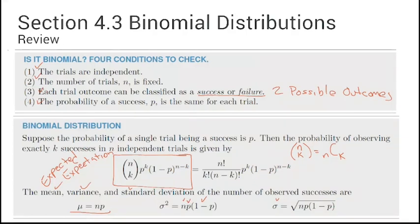We're going to use these formulas and go over some binomial distribution problems, then extend further. It's not too bad if I just want the probability of getting exactly five heads, but if I flip a coin a hundred times and want to know the probability of getting between 48 and 65 heads, that's a lot of calculations. We're going to learn some tools today to help work around that.